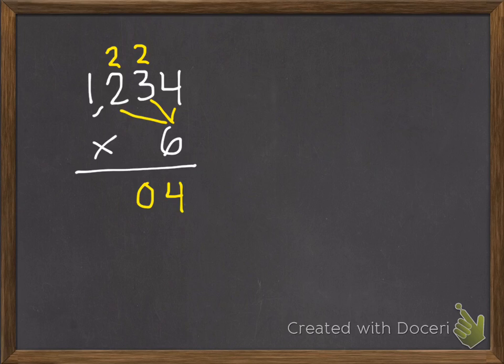So I put my two in the hundreds, my zero in the tens. Then multiply my hundreds. Six times two hundreds is twelve. Plus the two extras is fourteen. Then I multiply my thousands. Six times one thousand is six thousands. Plus one is seven. So I get seven thousand four hundred four. And that's my answer.